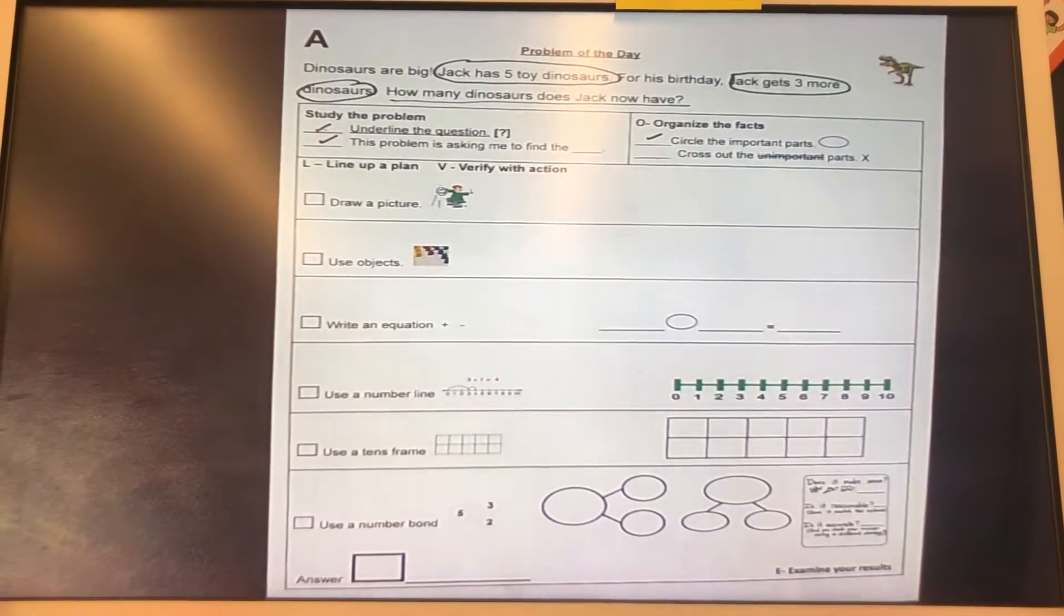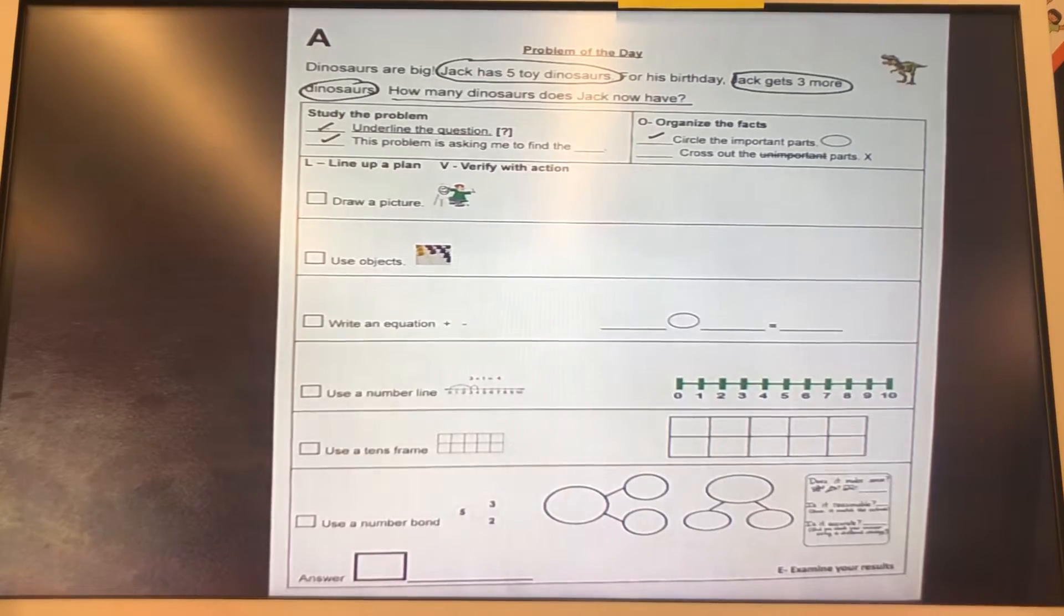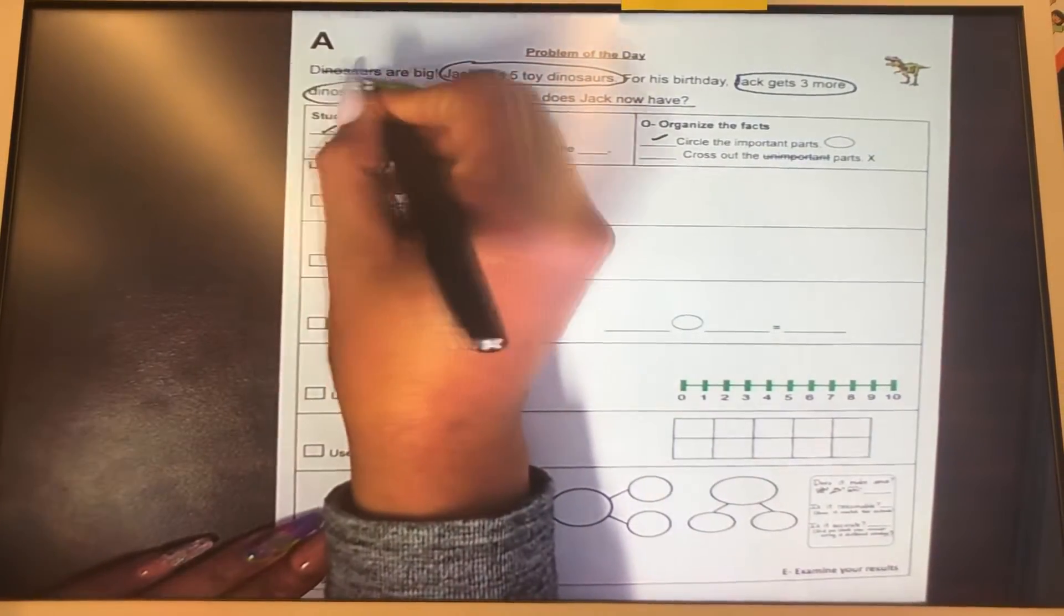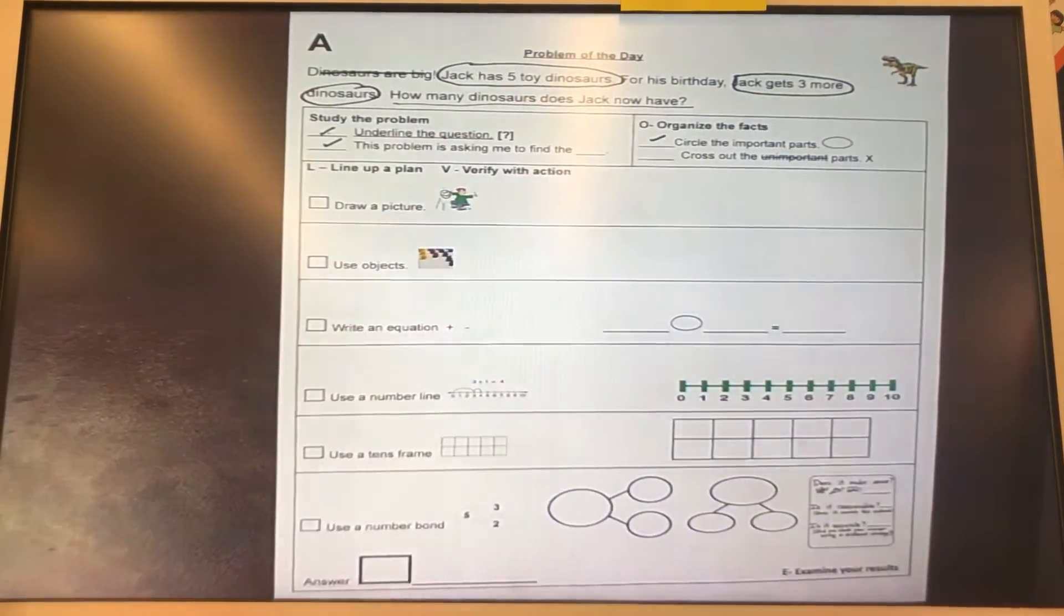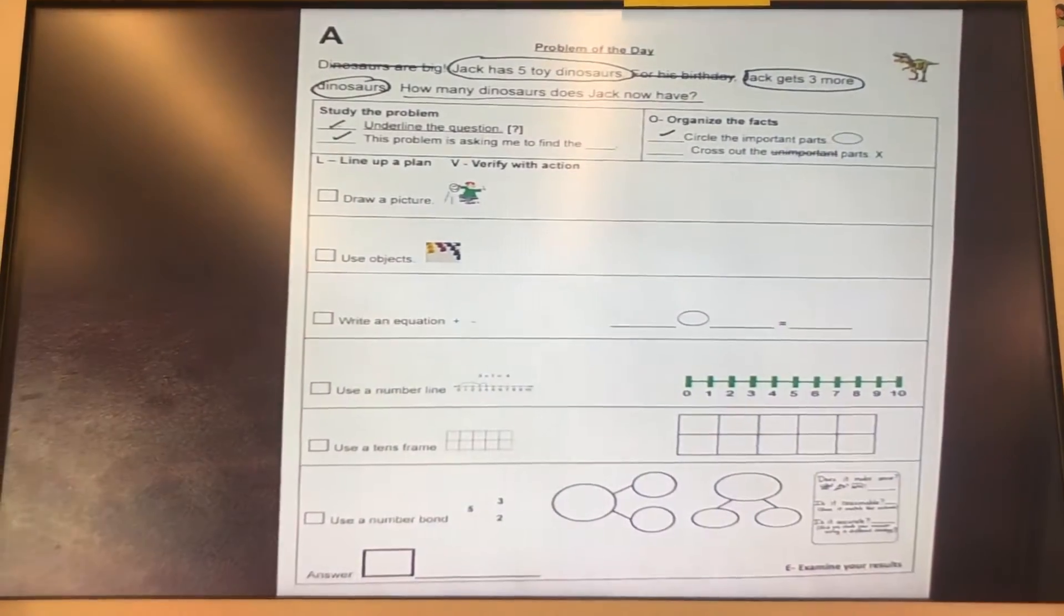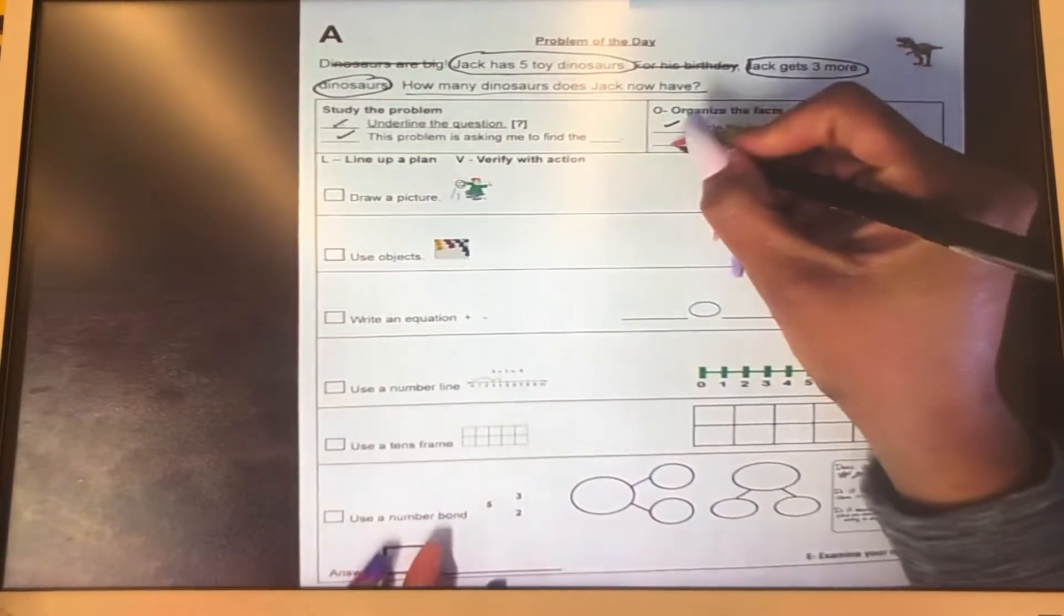Okay. The next thing we need to do is cross out the unimportant parts. Dinosaurs are big. We don't need that to solve our problem, for his birthday. So we have S and O completed.